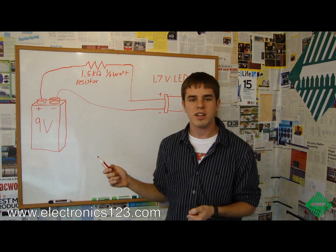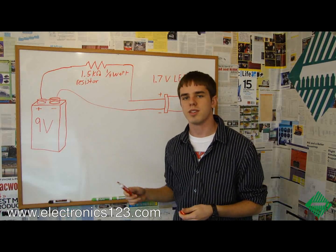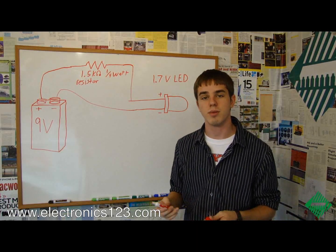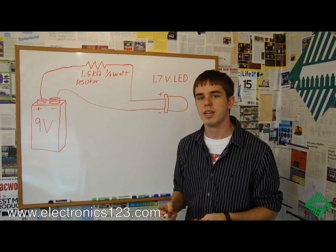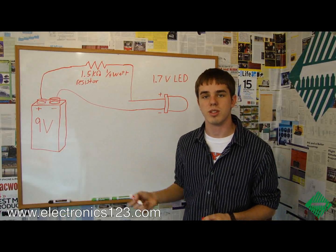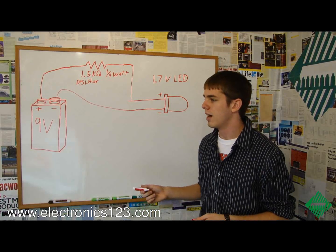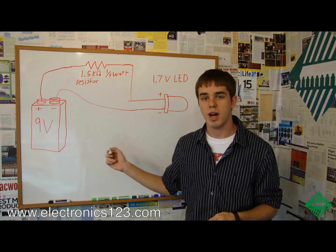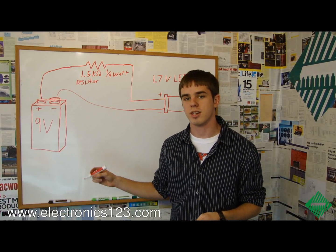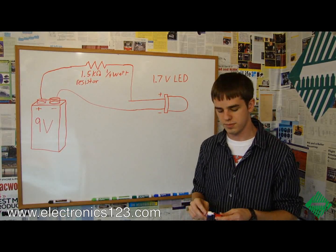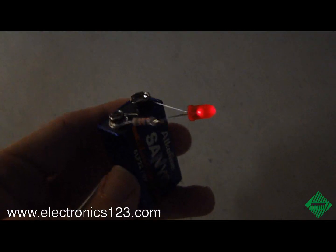Things like this would change — you would have different resistance values if you had multiple LEDs hooked up in series, which you can do. What you'll need to do is recalculate Ohm's Law and figure the current draw, changing the bottom number in the equation for the current draw of multiple LEDs. And this is what the finished working example looks like.